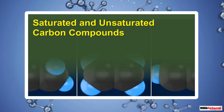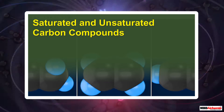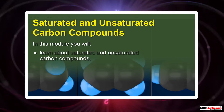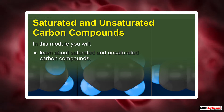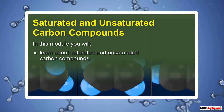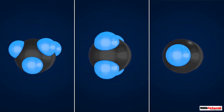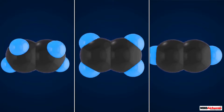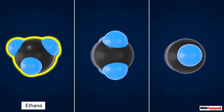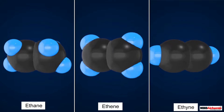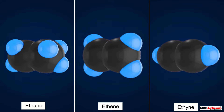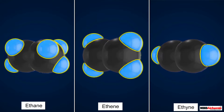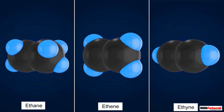Saturated and unsaturated carbon compounds. In this module you will learn about saturated and unsaturated carbon compounds. Shown here are the molecules of three different carbon compounds: ethane, ethene, and ethyne. In all three molecules the number of carbon atoms is two, but the number of hydrogen atoms is different in each case.